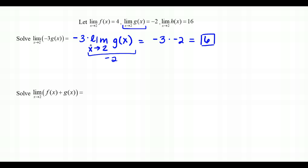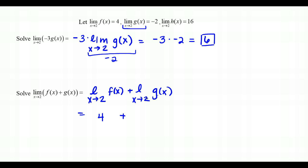For the limit as x approaches 2 of f(x) + g(x), we apply the Sum Law and split it into the limit as x approaches 2 of f(x) plus the limit as x approaches 2 of g(x). From our given values, the limit of f(x) is 4 and the limit of g(x) is -2. So 4 + (-2) gives a final answer of positive 2.